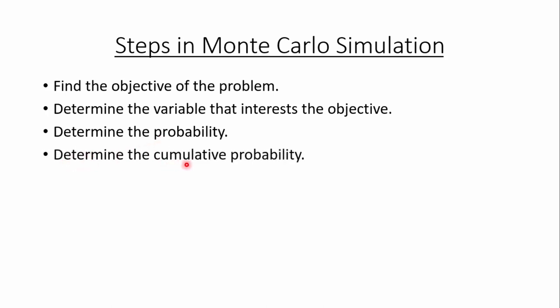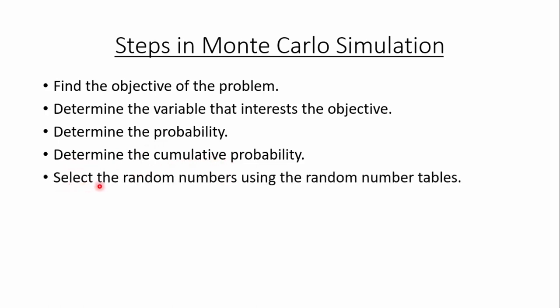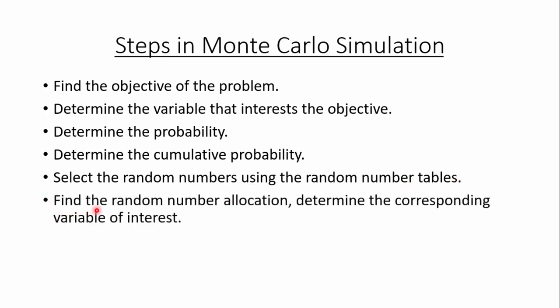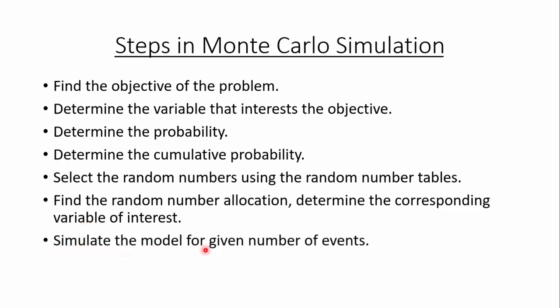After calculating the probability we need to determine the cumulative probability, and after that we need to select the random numbers using the random number tables. Usually random numbers are given in the problem, and if not, we select them from random number tables. After that we need to find the random number allocation — we identify which random number interval the selected random numbers fall in. On the basis of that we will determine the corresponding variable of interest, meaning we find the value of the variable selected earlier. Finally we need to simulate the model for the given number of events.